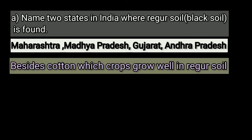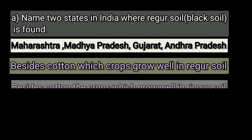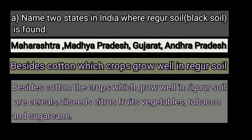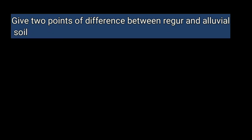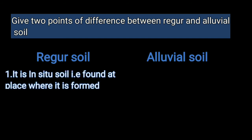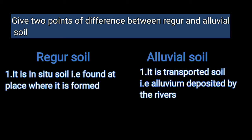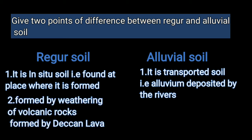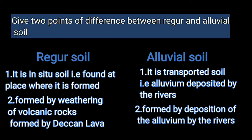Besides cotton, which crops grow well in regur soil? Besides cotton, the crops which grow well in regur soil are cereals, oilseeds, citrus fruits, vegetables, tobacco, and sugarcane. Give two points of difference between regur and alluvial soil. Regur soil is an in-situ soil, found at the place where it is formed, and is formed by weathering of volcanic rocks from Deccan lava. Alluvial soil is transported soil, i.e., alluvium deposited by rivers, formed by deposition of alluvium.